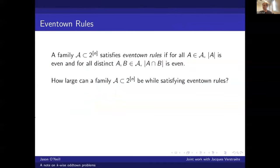The other classical result is eventown rules. So we have more or less the same question, but I'm going to change one condition. And that's the size of each set in my family is now even. And we still have the pairwise intersections are even. And the question is, how large can we have while adhering to these rules?